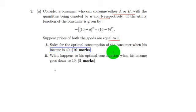Solve for the optimal consumption of the consumer when his income is 40. What happens to his optimal consumption when his income goes down to 10?